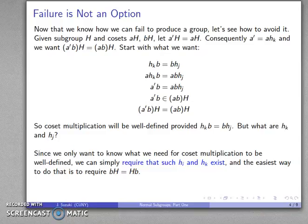The easiest way we can do that is to just require that bH and Hb - this left coset and the corresponding right coset - we can require that those have to be the same thing.